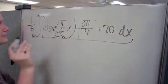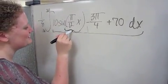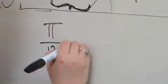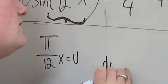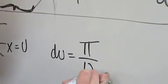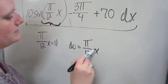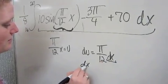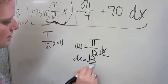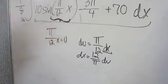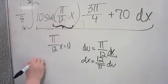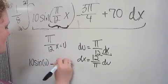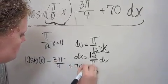But, wait. We have to take u, make this, substitute it for u. So, it becomes πx/12 equal to u. And then, we have to find the derivative of that, which is du equals π/12 dx. So, when we plug all this back in, we need to make it equal to dx. So, it becomes dx equals 12/π du. Now, we can plug it all back into this integral. So, it becomes 10 sin(u) minus 3π/4 plus 70 dx.